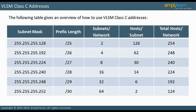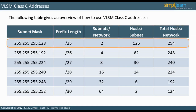With a Class C address, four octets (24 bits) can be used for the network, leaving 8 bits to split between subnets and hosts. Thus, 1 through 6 host bits for subnets can be borrowed, and the subnet mask with corresponding prefix length is shown on screen. With a mask of 255.255.255.128, a slash 25 prefix length, there will be two subnets with 126 usable hosts per subnet, for a total of 254 usable hosts.